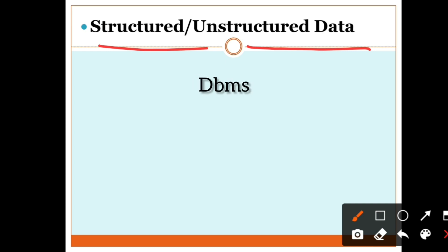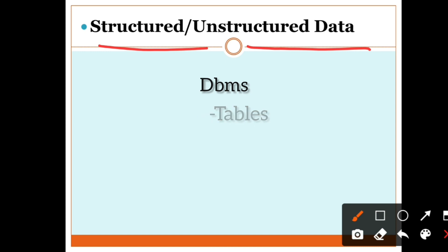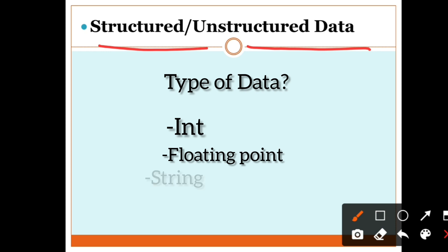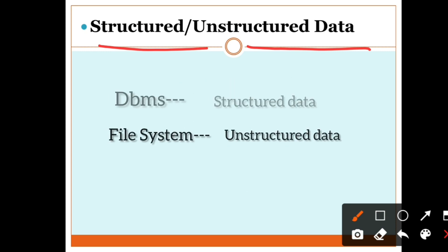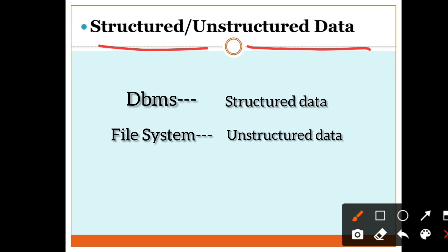In a file system, data is stored in an unstructured form — we have not defined any data model. But in DBMS, we first create tables to store and manage the data, and we must define the data type before storing anything. We can't store data in tables before defining whether it's integer, float, or string data — otherwise it will give errors. So the data in DBMS is structured data.